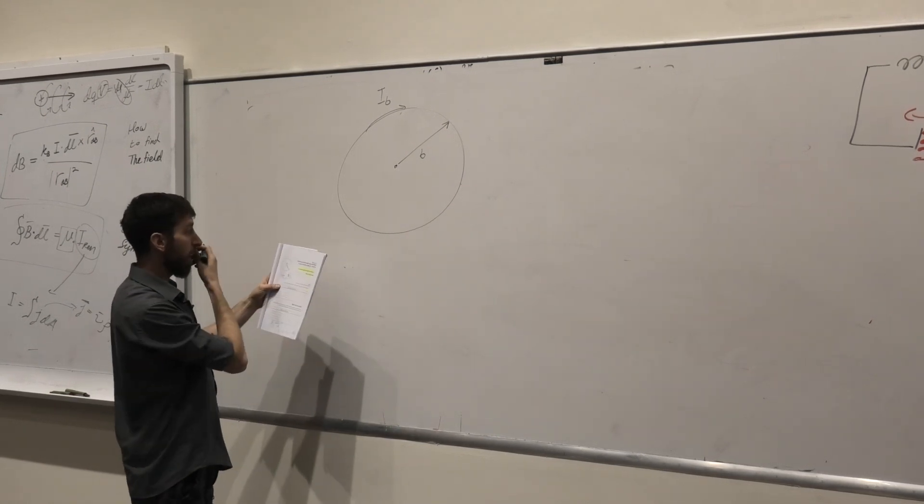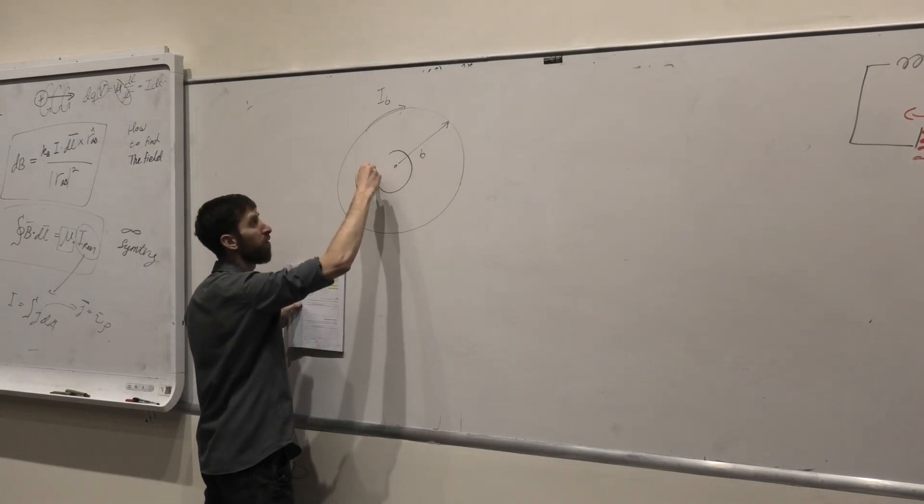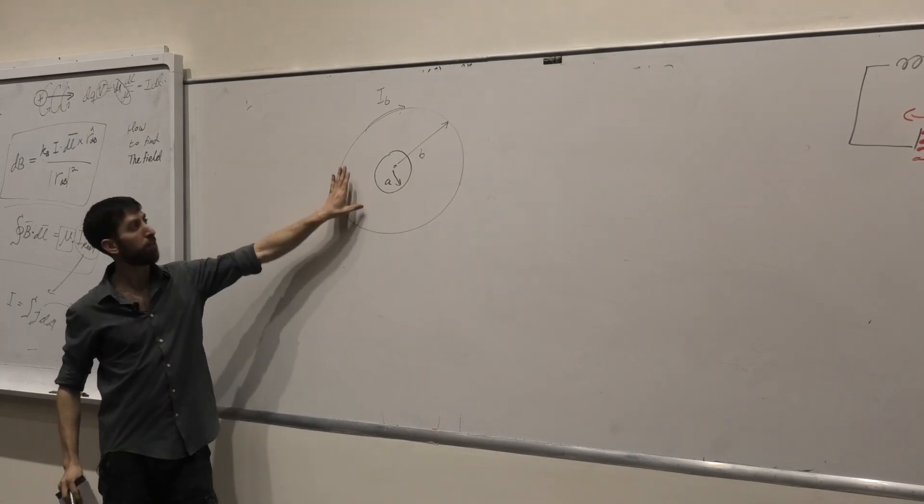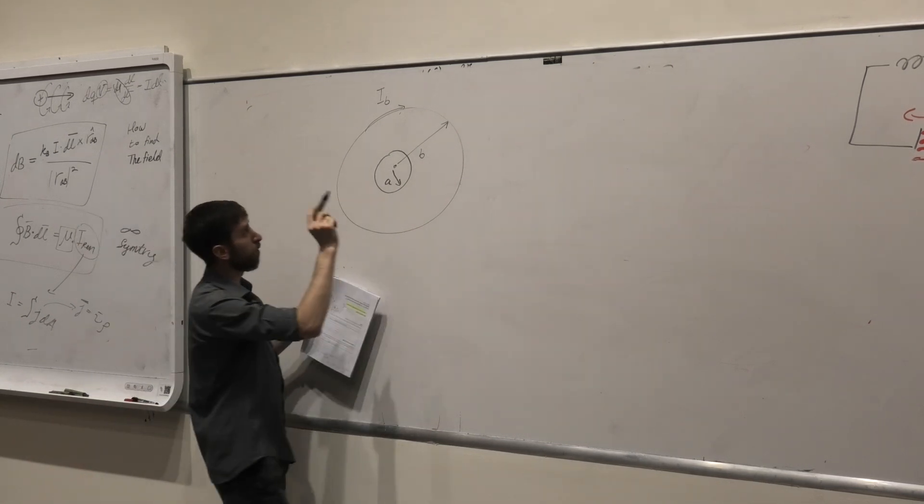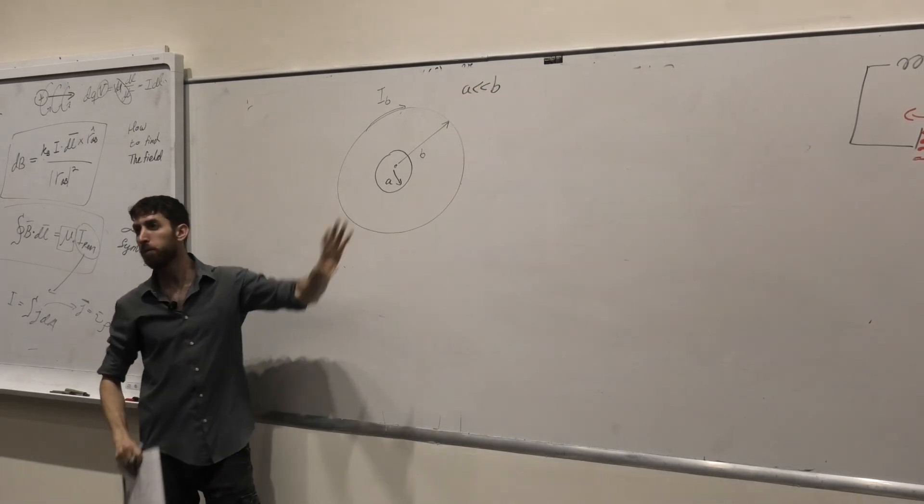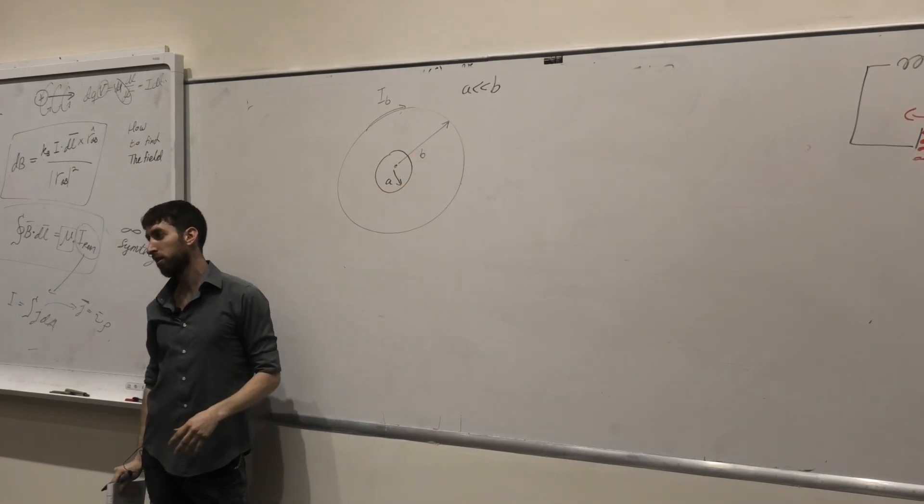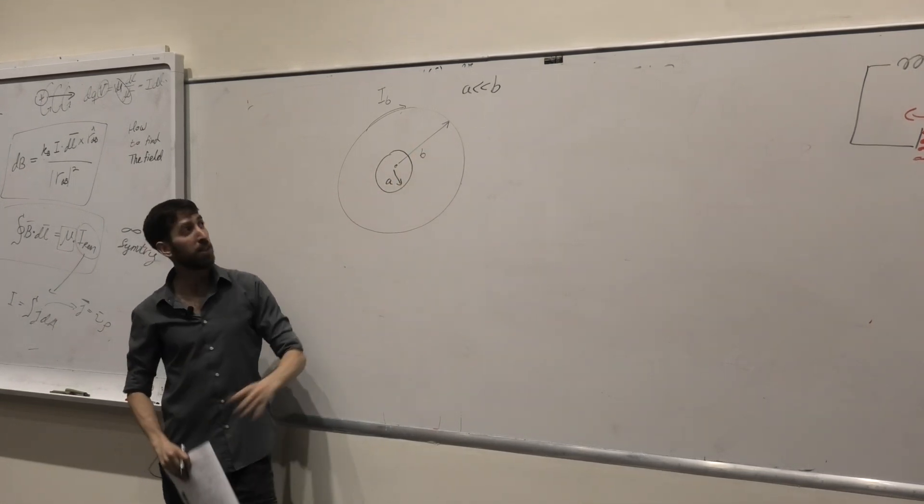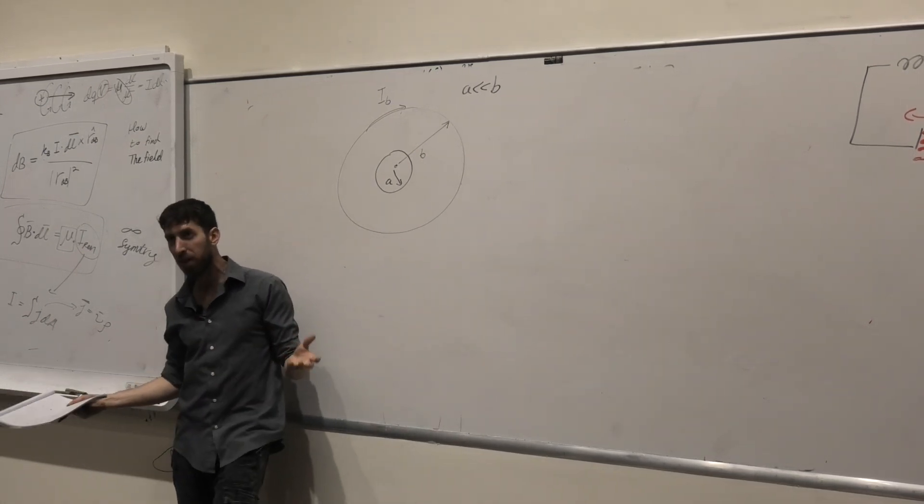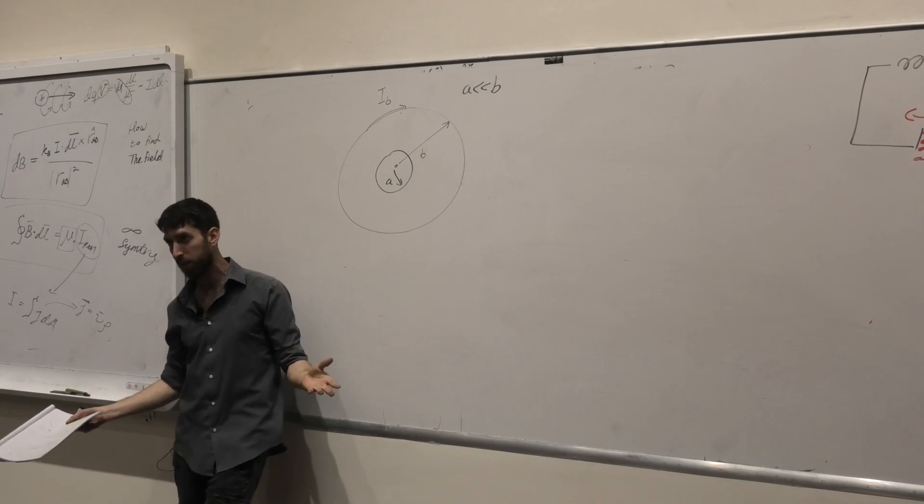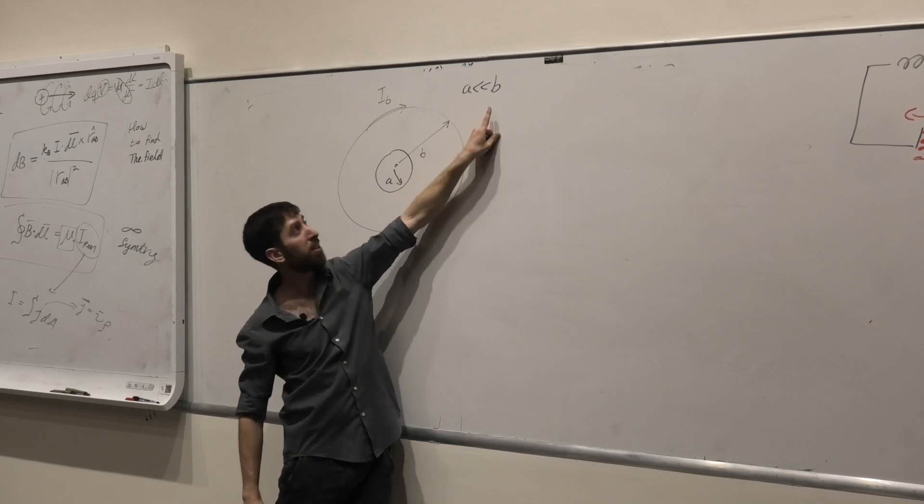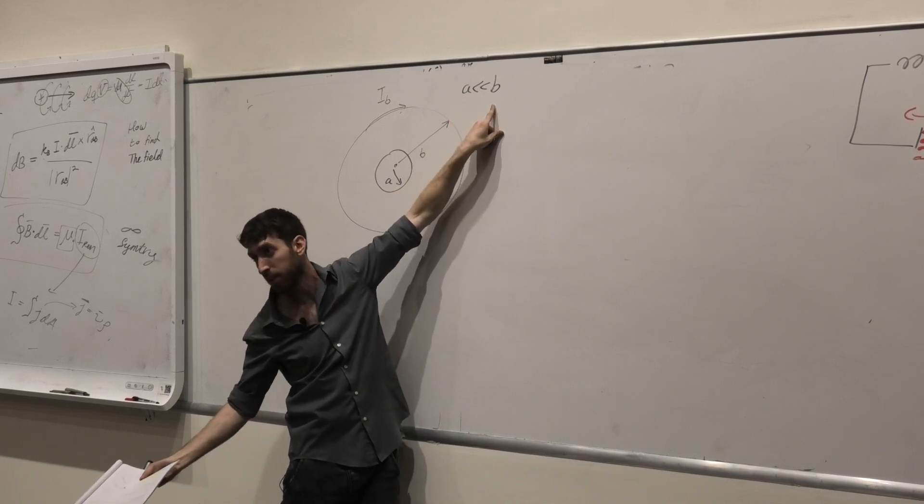And I have also a ring over here with the different radius a. They're concentric. And now, another point, I want to say that b is much larger than a. What does this mean? It means that if a is 1, b is hundred thousands. It just means that this is really big compared to that. That's the concept.